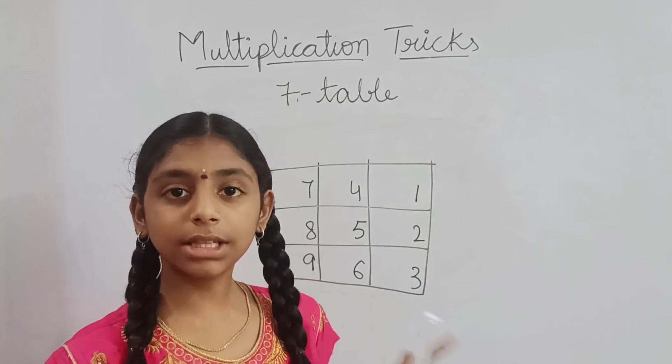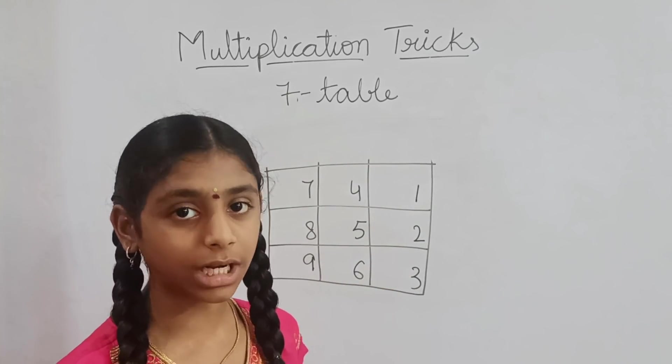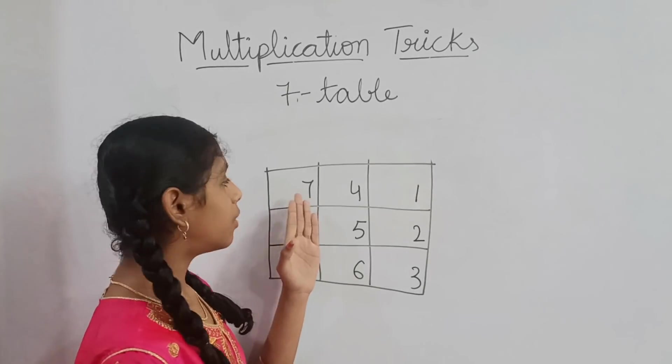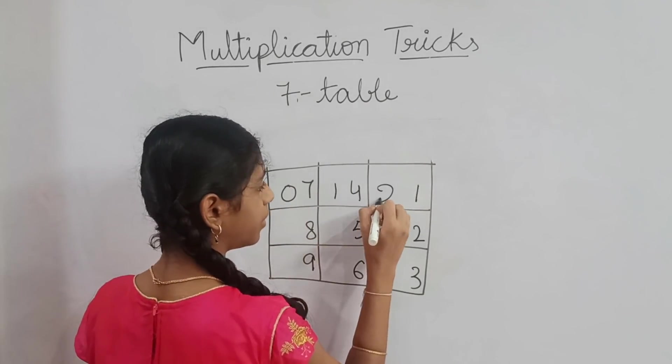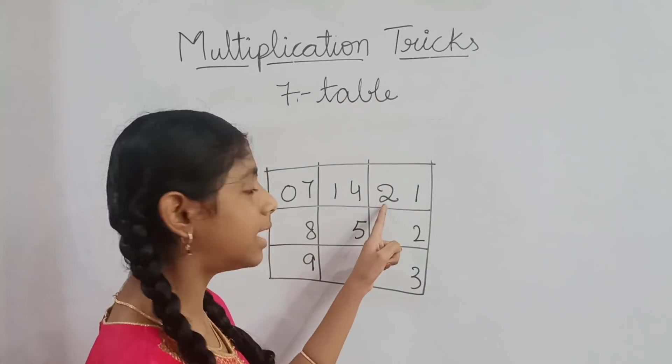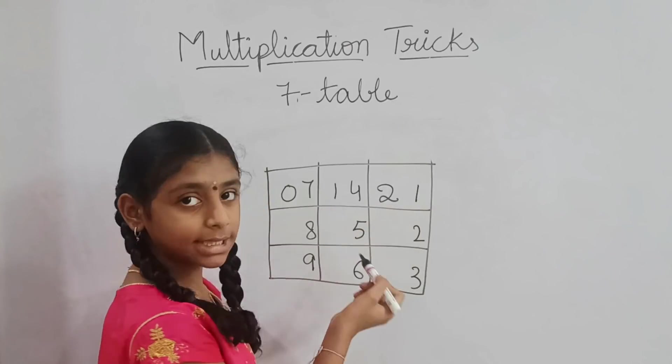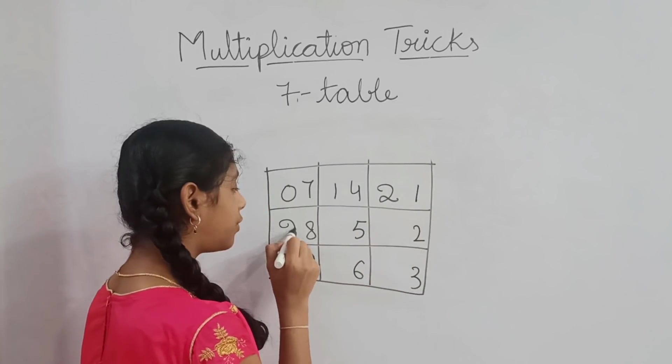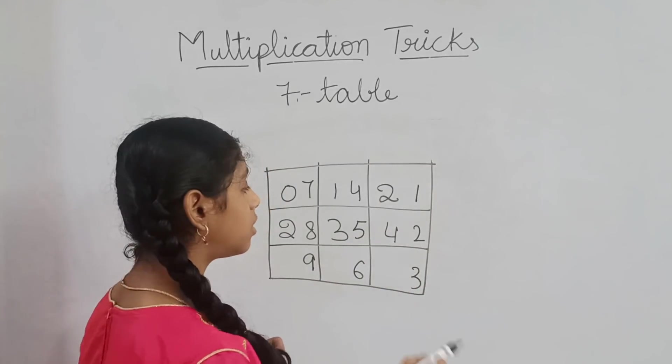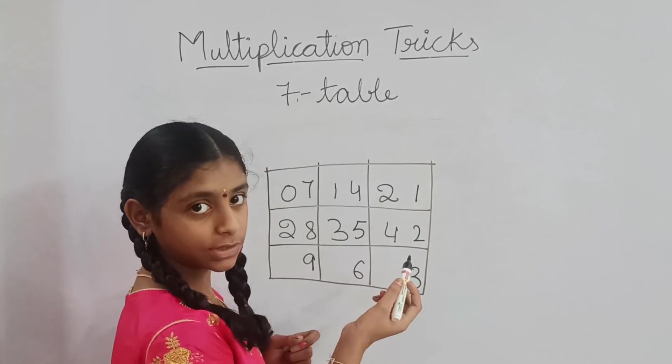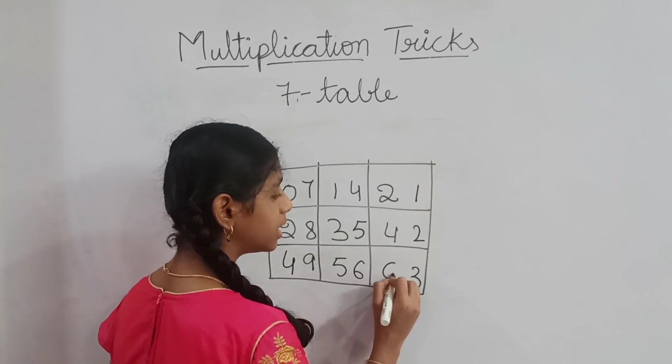So, in 3 table, we wrote 1st row totally 0 but coming to 7 table, that's not like that. 1st row: 0, 1, 2. Here 1st row, the last number I wrote is 2. In the 2nd row, from 2 only we should start like 2, 3, 4. 2nd row, the ending number I wrote is 4. So, from 4, I will start: 4, 5, 6.